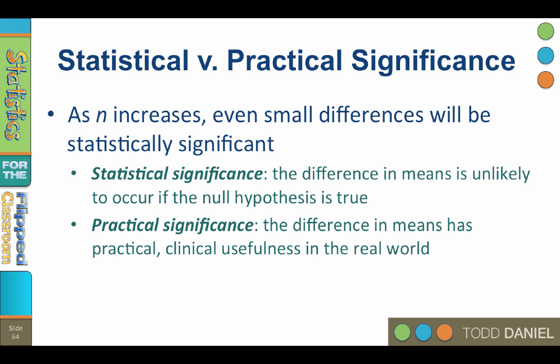Practical significance is a standardized measure of the difference between your sample and the null. It removes the influence of sample size. Practical significance means that the difference has clinical, real-world significance. It is a way of determining if statistically significant differences really matter in the real world.